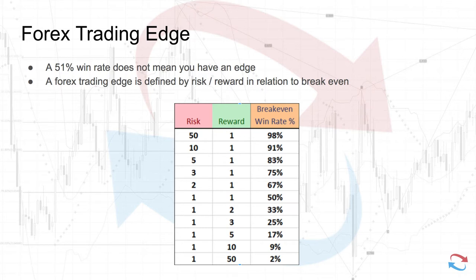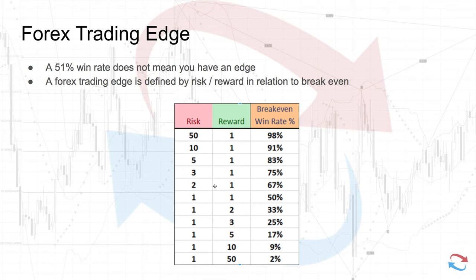A 51% win rate does not mean you have an edge. If your risk/reward is backwards — for example, you're risking two pounds and only going for a one pound reward — then your break-even rate, the point where you don't lose money, requires a 67% win rate. So a 60% win rate where you're risking more than your profit target is not an edge in the market.